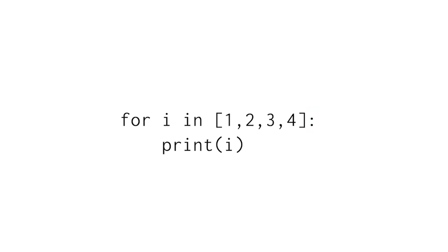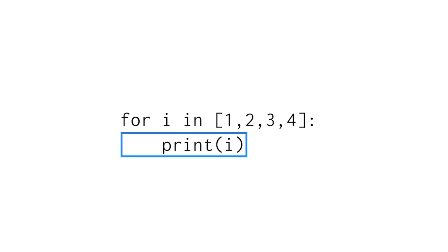The loop body refers to the indented lines after the loop header. These represent the actions that are repeated while the loop iterates. In this case, it will print each number in the list — first 1, then 2, and so on.